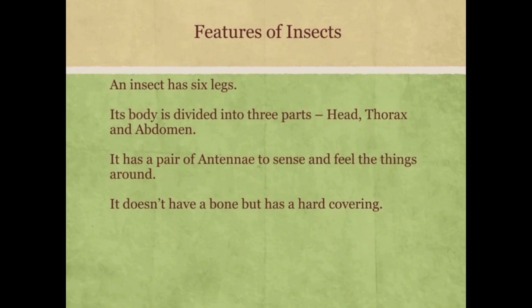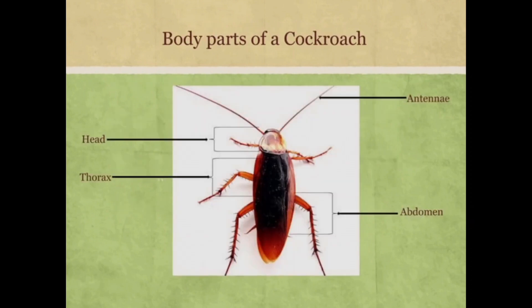An insect has six legs. For example, when you see a cockroach, you can observe that it has six legs. Its body is divided into three parts: the head, thorax and abdomen. It has a pair of antennae to sense and feel the things around it. It doesn't have a bone but has a hard covering.